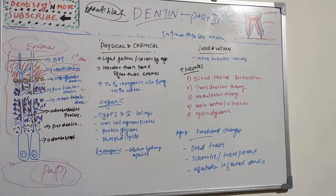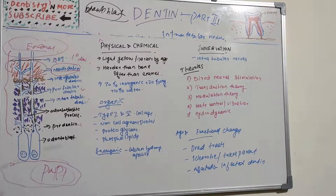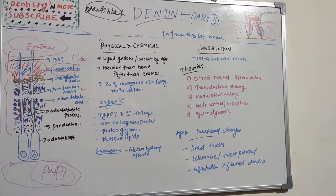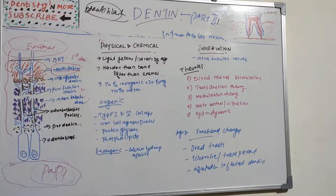The gate control or vibration theory states that pain is a function of the balance between information traveling into the spinal cord through large nerve fibers and information traveling through small nerve fibers. Large nerve fibers carry non-nociceptive information; small fibers carry nociceptive information. According to this theory, A-beta fibers, which transmit information from vibration receptors, stimulate inhibitory neurons in the spinal cord, which reduce the pain signal transmitted from A-delta and C fibers across to the brain.